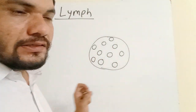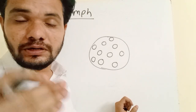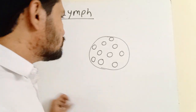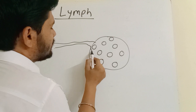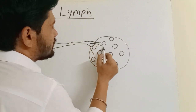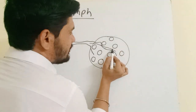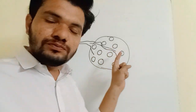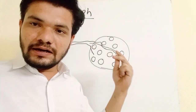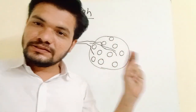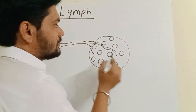These cells need nutrients and essential gases like oxygen. Blood is the transporter of these nutrients and gases. The blood capillaries enter into the tissue, and whenever these blood capillaries enter the tissue, the nutrients diffuse into the cells.